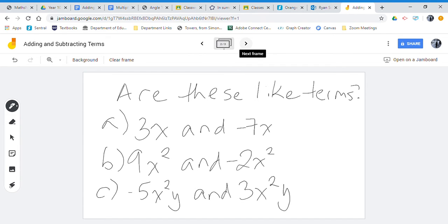So to start, I've got 3x and negative 7x. So first of all I look at the pronumeral, and are my pronumerals the same? Yes they are. Next I check to see if the exponent is the same, and the exponent here is 1. We don't write our ones, and so they are the exact same. So yes, these two are both like terms.